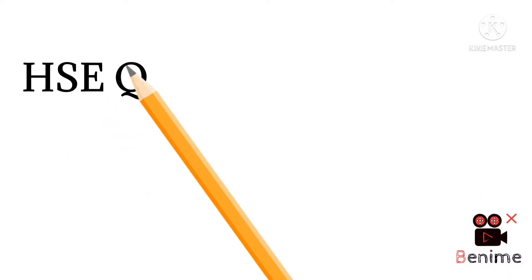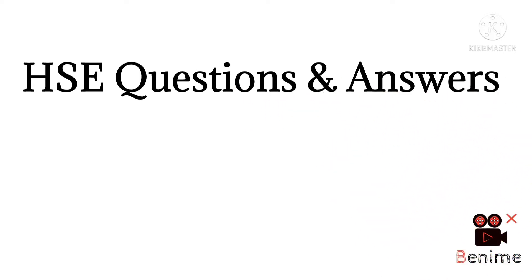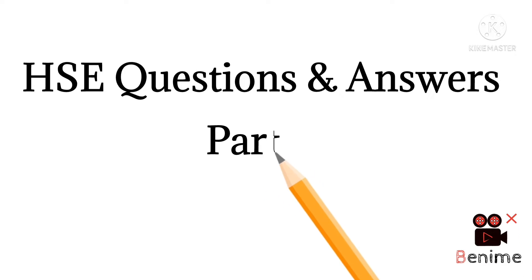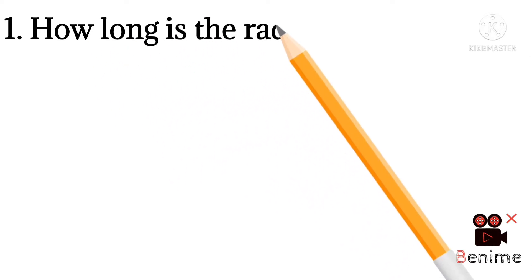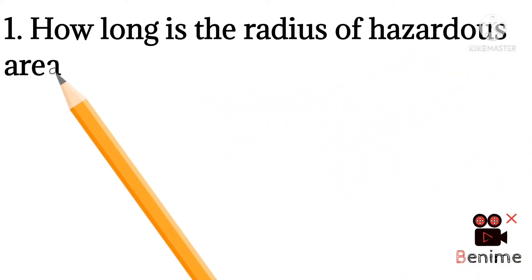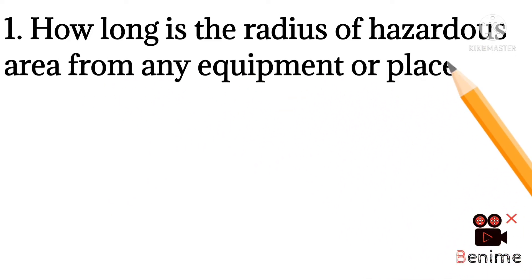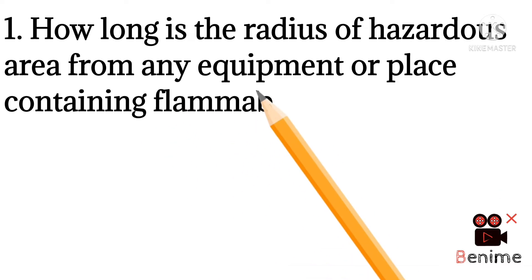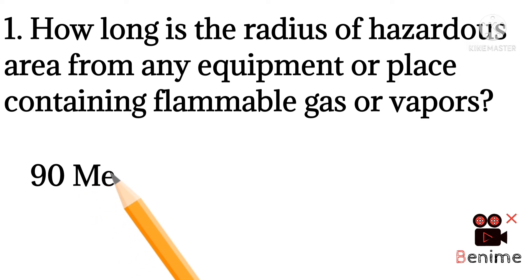Hello friends, today our topic is HSE questions and answers, part 2. Question number one: how long is the radius of hazardous area from any equipment or place containing flammable gas or vapors? 90 meters of radius is the answer.